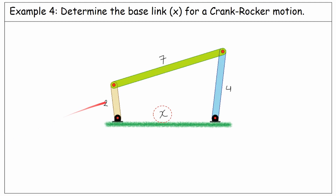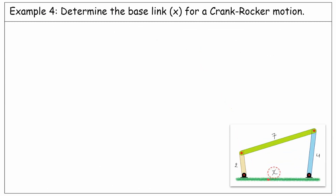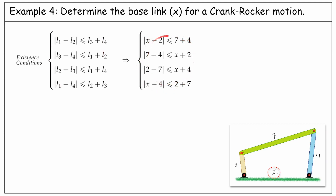In the next example, the driver is 2 unit lengths, the coupler is 7, the follower is 4, and we need to determine the range for the base link for having a crank-rocker motion. Firstly, we need to find a range for the base link to satisfy the existence of the linkage. Using the four conditions and substituting the lengths, after solving the system of inequalities and taking the intersection of the requirements, we will have X must be between 1 and 13.